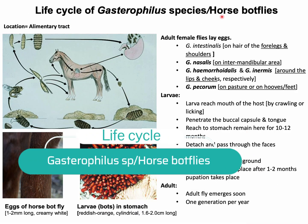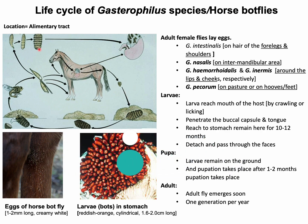Life cycle of Gastrophilus species: adult females lay eggs at different locations on the horse's body. Gastrophilus intestinalis lays eggs preferably on the hairs of the forelegs and shoulders. Gastrophilus nasalis lays eggs in the intermandibular region or beneath the jaw. Gastrophilus haemorrhoidalis and Gastrophilus inermis lay eggs around the lips or on the cheeks respectively. Gastrophilus pecorum lays eggs on hooves, legs, or on grass. These eggs are creamy white to pale yellow in color, except those of Gastrophilus haemorrhoidalis and Gastrophilus pecorum, which are dark brown to black.